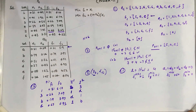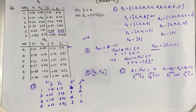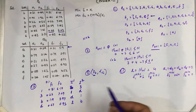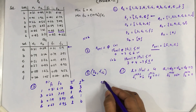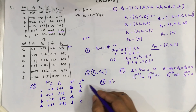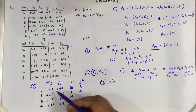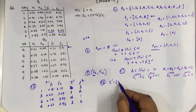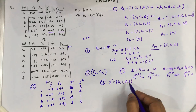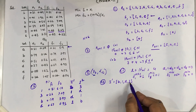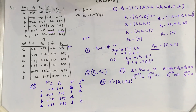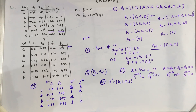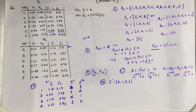Next we calculate the crowding distance based on these index sets, which are very important. In the third step, according to index set I1 — sorted by F1 — the order of solutions is B, 1, D, and 3.